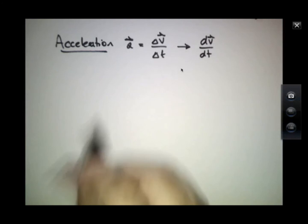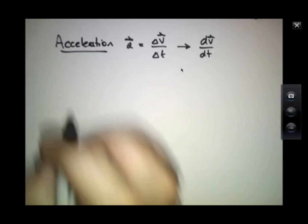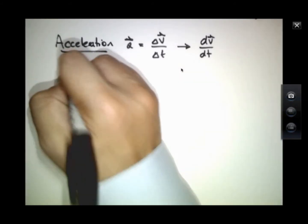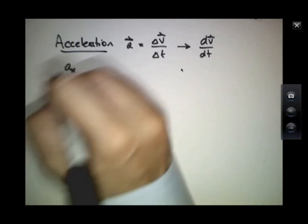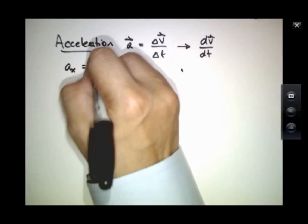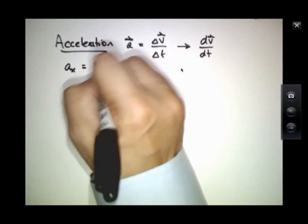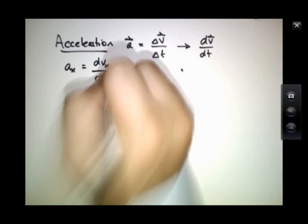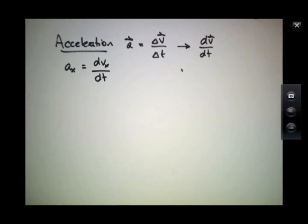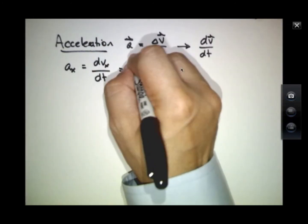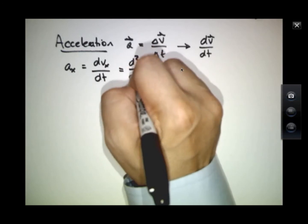So A, the acceleration, has components just like positions and velocities have components. A_x, the x-component of this acceleration vector, will be the time derivative of the x-component of velocity, or the second time derivative of x.